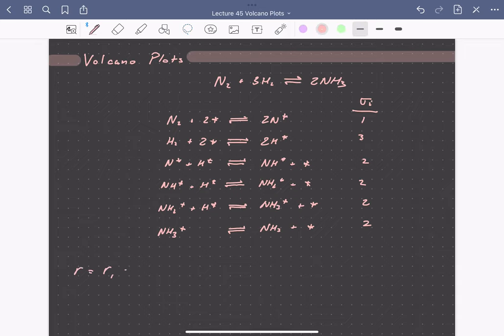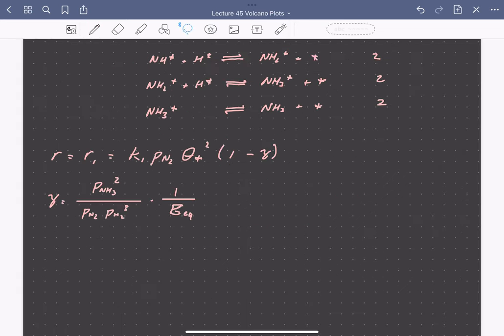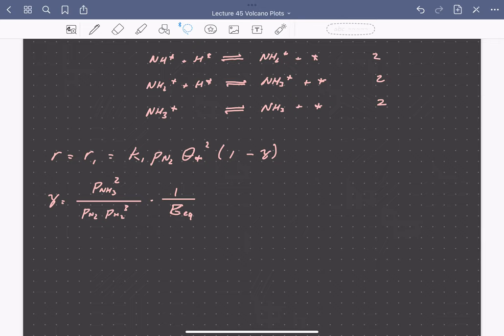We can write that the rate is equal to the rate of step one, which is equal to the forward rate K1 times the pressure of nitrogen times the vacant site coverage squared times one minus an approach to equilibrium. The approach to equilibrium is simply the pressure of products over the pressure of reactants raised to their stoichiometric coefficients times one over the equilibrium constant for the entire reaction. The equilibrium constant for the overall reaction is the product of the equilibrium constants for each elementary step raised to their stoichiometric numbers, so how many times that step happens in one catalytic turnover.